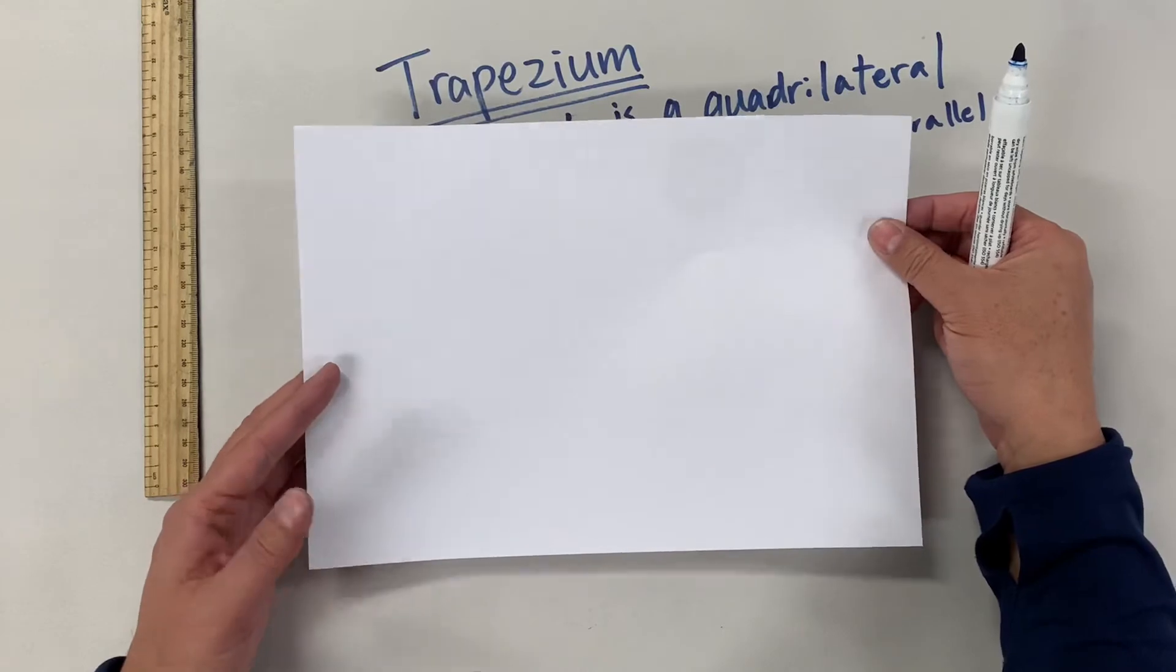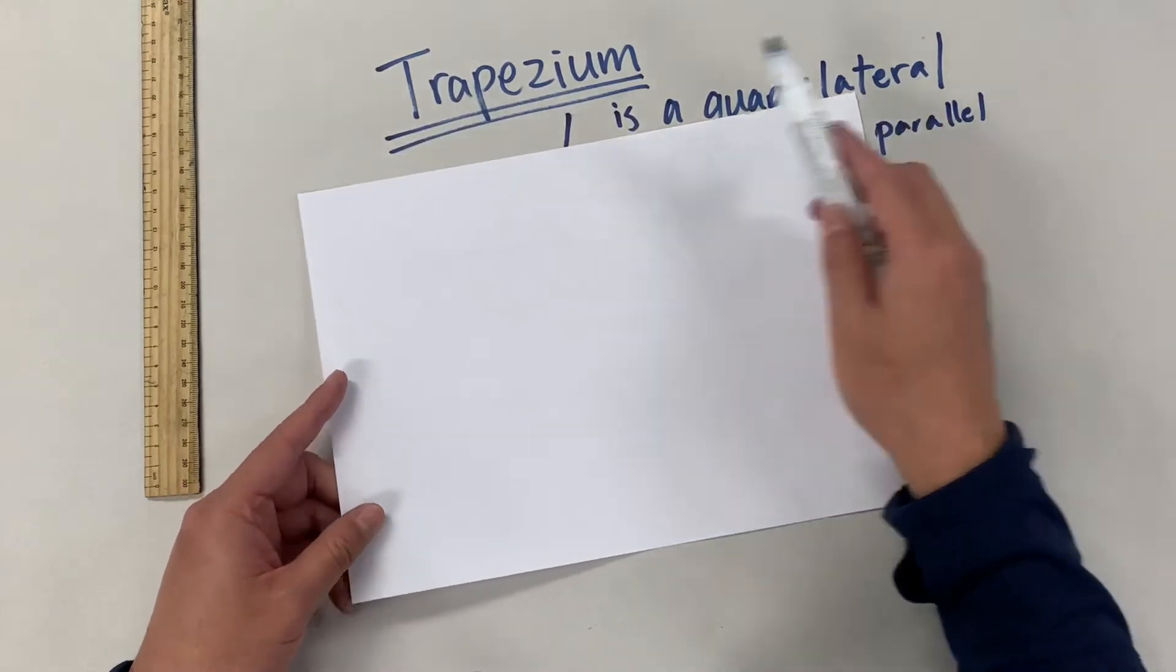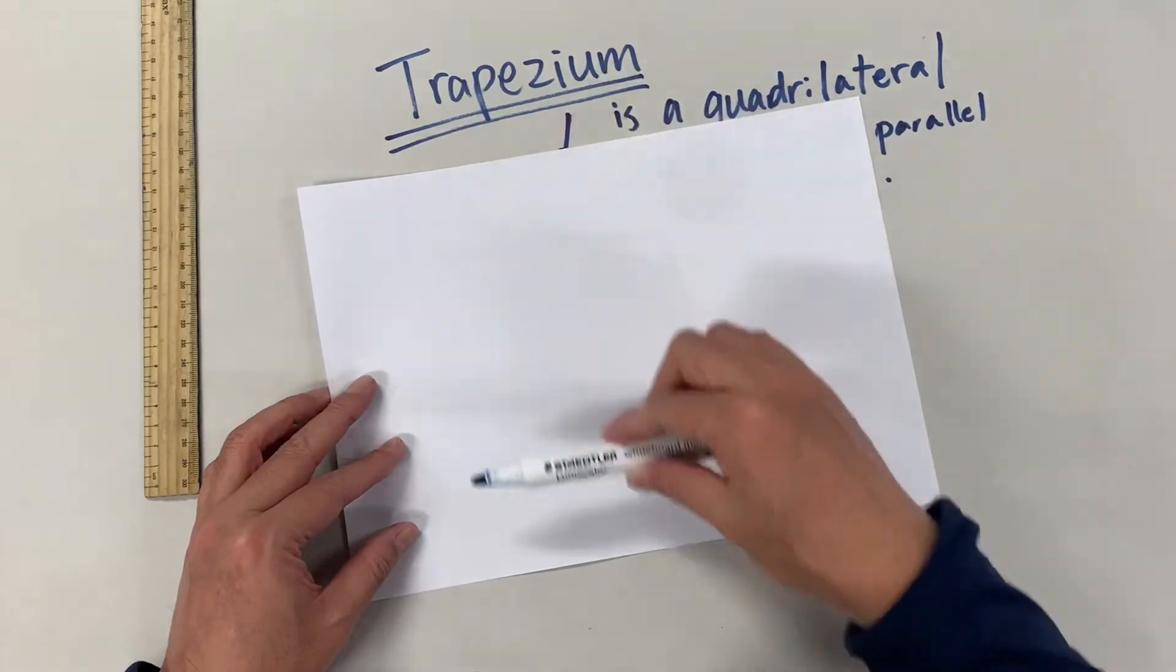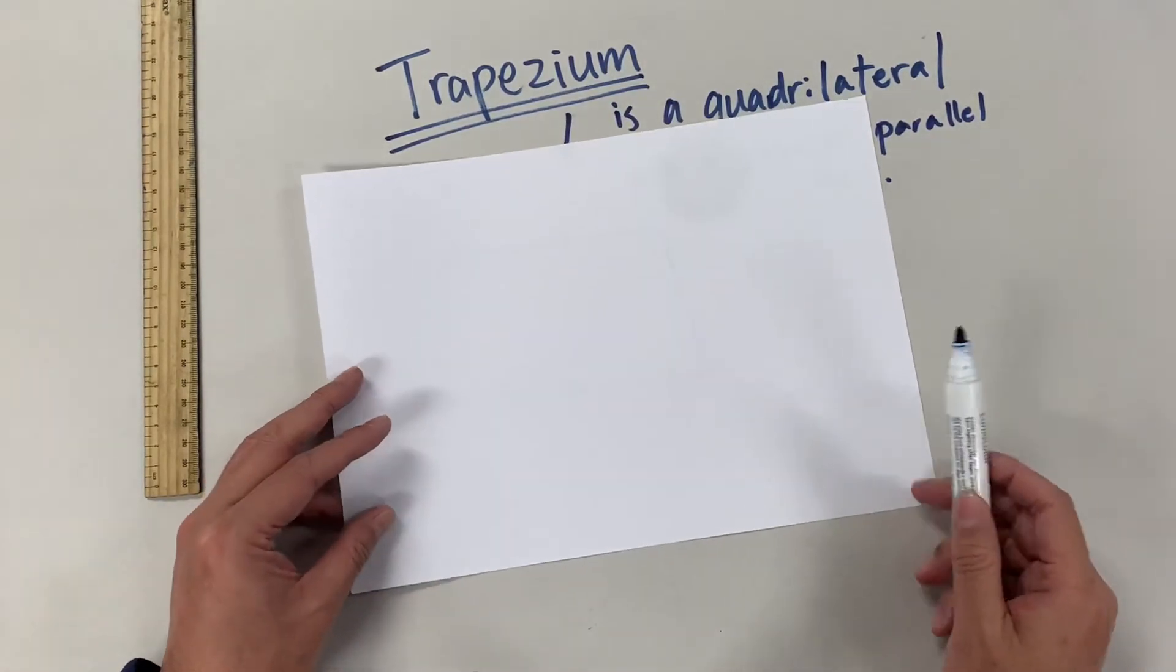What about a square? Is square trapezium? Square is also trapezium because it has at least a pair of parallel sides.